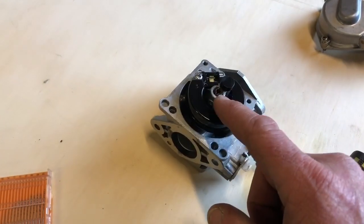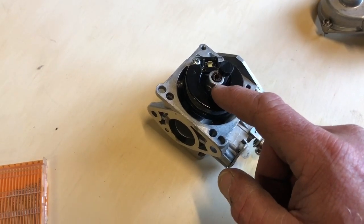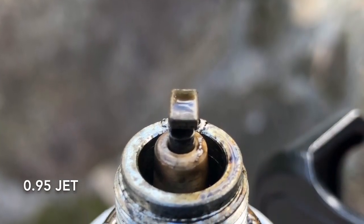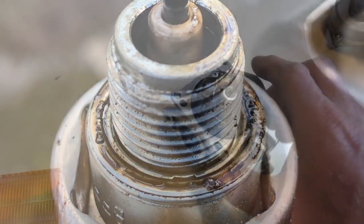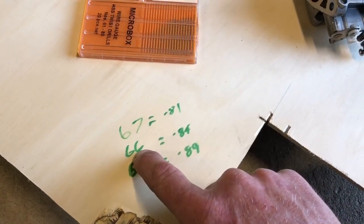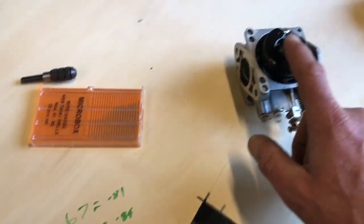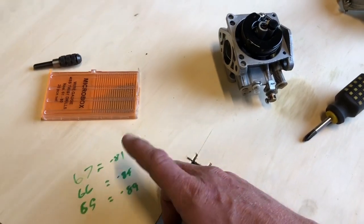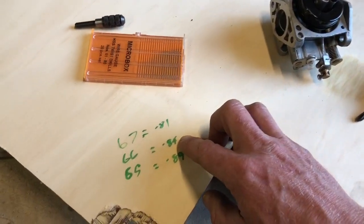And then I've also tried a 0.95 millimeter which is running too rich, and I'll show you the picture now of that. At the moment I've drilled it out to a number drill number 66, which is 0.84, and that ran a little bit better than the standard 0.8 factory, but it's still running slightly lean.